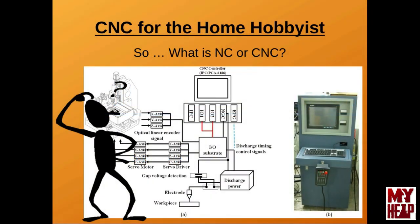So the big question here is: what is NC or CNC? NC stands for numerical control and it originated in the 40s and 50s. It came about as a means of controlling machines in an automated manner, in order to produce machined items in a faster and more consistent way. In the early days, machines were controlled with a program that was punched on paper tapes or into cards, which were then fed into a tape or card reader into the controller for processing.